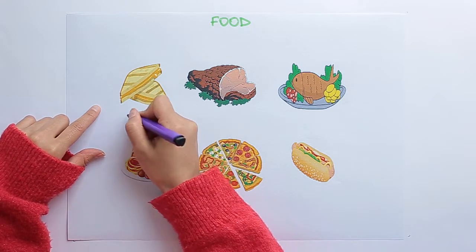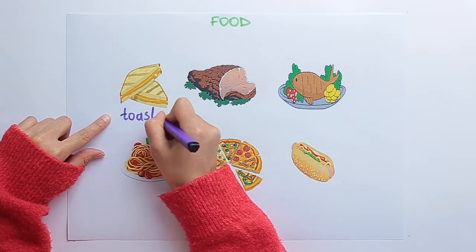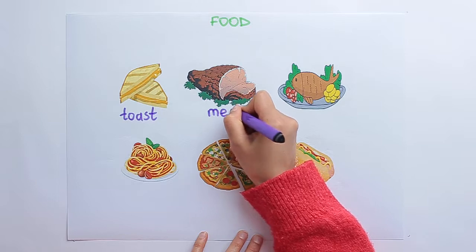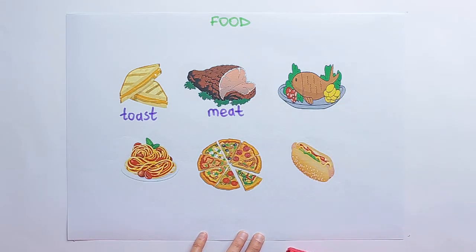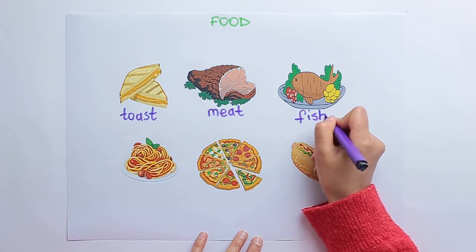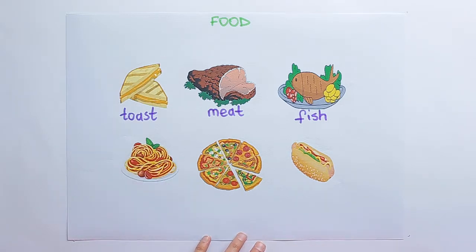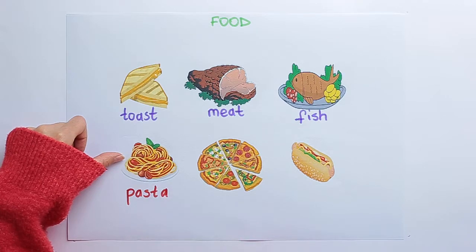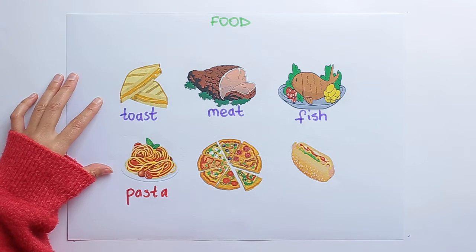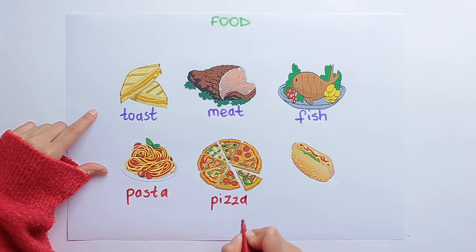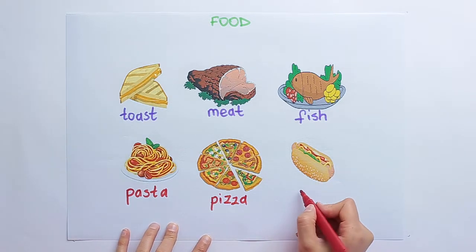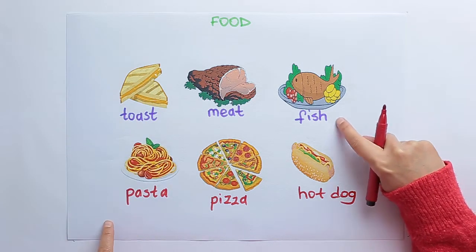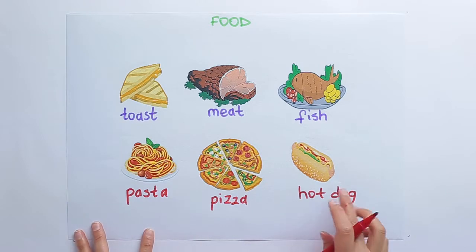What is it? Toast. We say toast. What is it? Meat. Next one — fish. Next, pasta. And do you know what this is? Pizza. And the next one is hot dog. Toast, meat, fish, pasta, pizza, and hot dog.